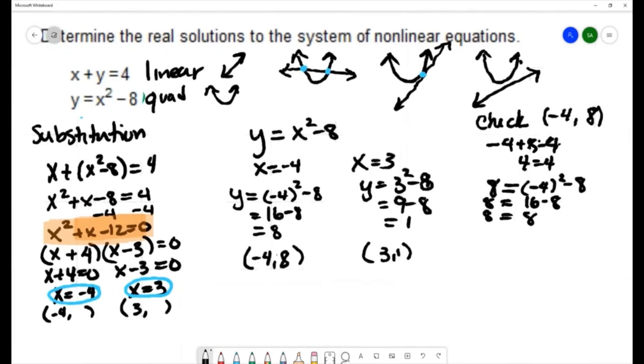Now we can check the other ordered pair 3, 1. For the first equation x plus y equals 4, 3 plus 1 equals 4 and that's a true statement. For the second equation y equals x squared minus 8, we would have 1 equals 3 squared minus 8. 1 equals 9 minus 8, 9 minus 8 is 1 and that's another true statement, so we verified that both of these ordered pairs are solutions to the system of nonlinear equations.